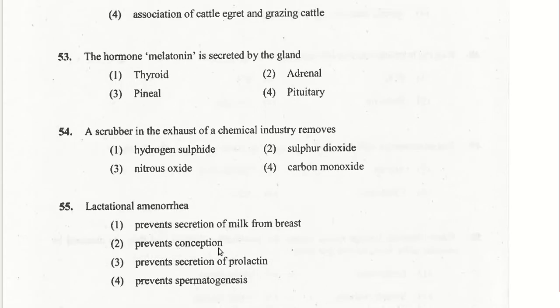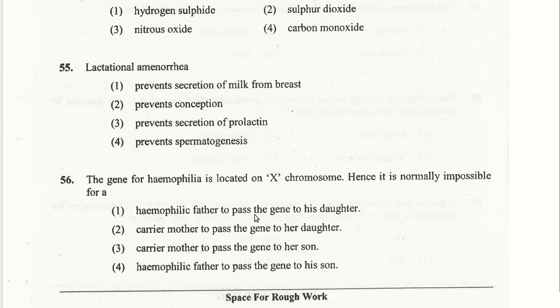Lactational amenorrhea prevents conception and is one of the natural barriers for contraception. The gene for hemophilia is located on the X chromosome, so it is normally impossible for a hemophilic father to pass the gene to his son.